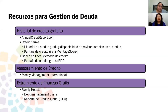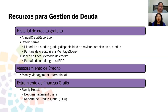Recursos para gestión de deuda. Historial de crédito gratuito en annualcreditreport.com — puedes revisar tu crédito una vez a la semana gratis. Credit Karma: cuando te inscribes estás dando autorización a Credit Karma para que use tu información personal. No tienes que usar esta opción porque está annualcreditreport.com que es gratis. Es disponible para revisar cambios en tu crédito una vez a la semana en este momento.